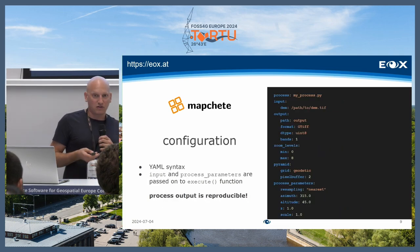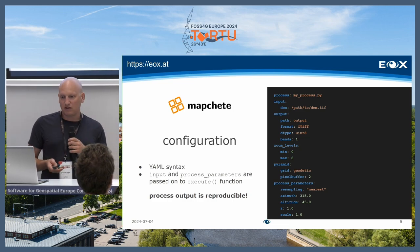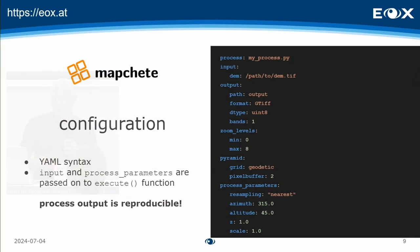The configuration is also very simple. We use the YAML syntax. The only things you have to define are the process itself, inputs, outputs, and optionally some additional data and processing parameters. With these two things — the process and configuration — the process output is perfectly reproducible.